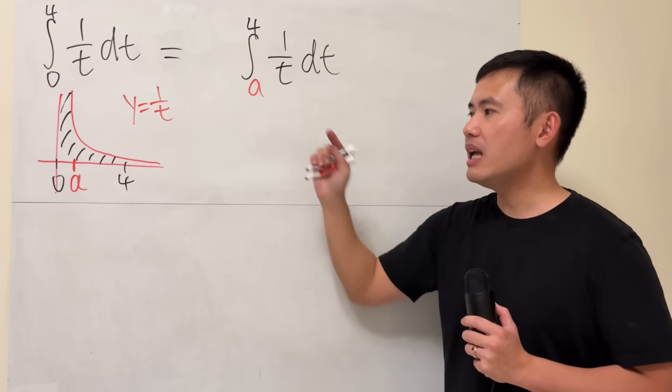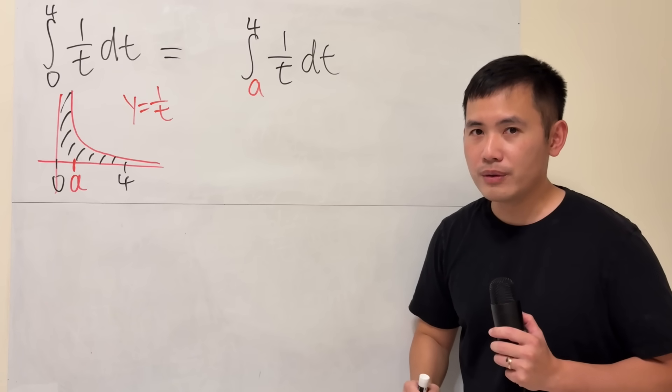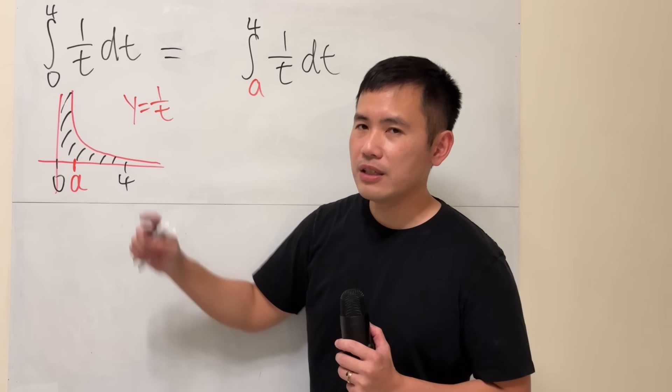Now, this is doable, because a is not equal to 0. But how can I make sense of that, though?